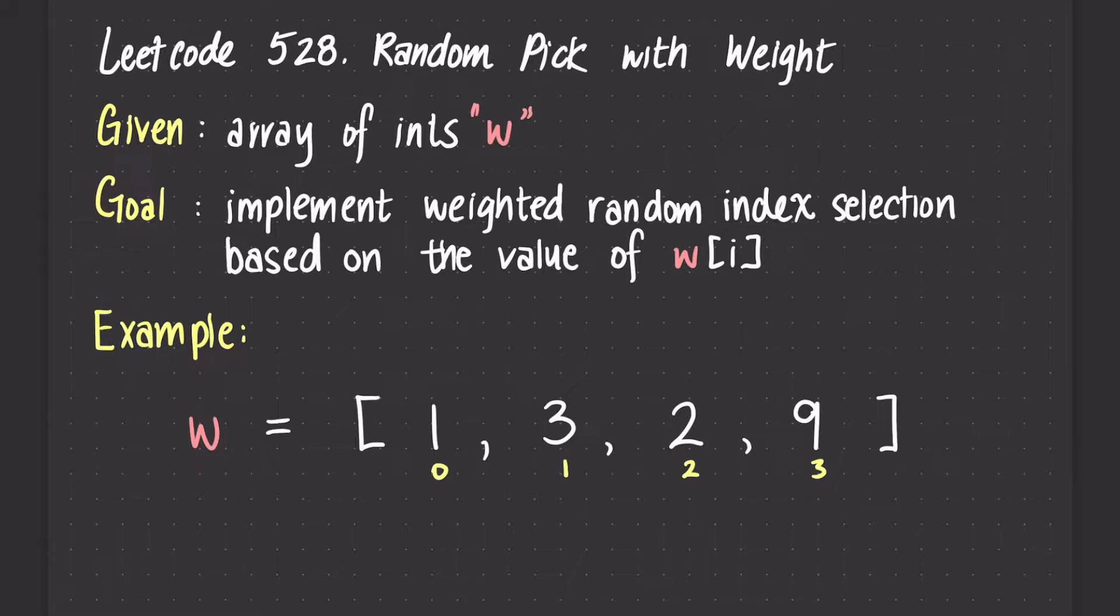In this question, we are given an array of integers called w. Our goal is to implement a weighted random index selection based on each value of w.